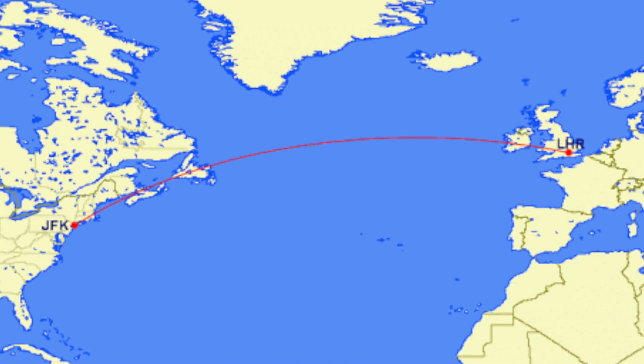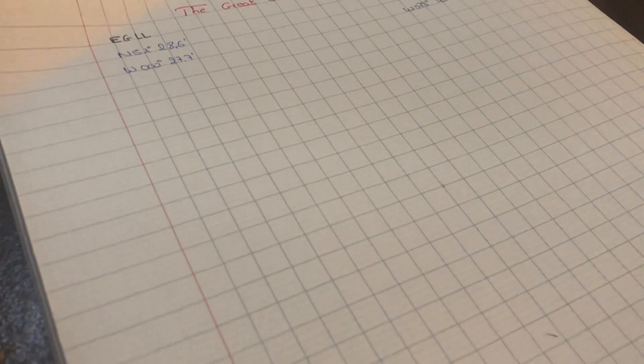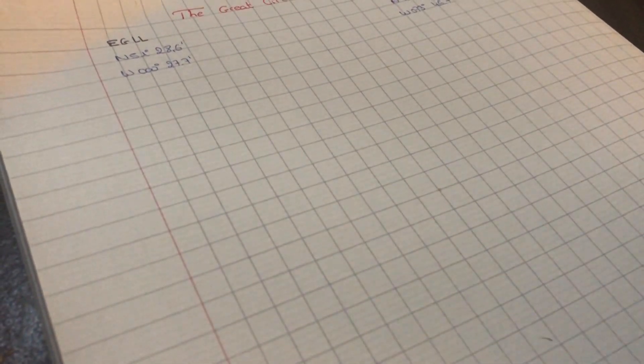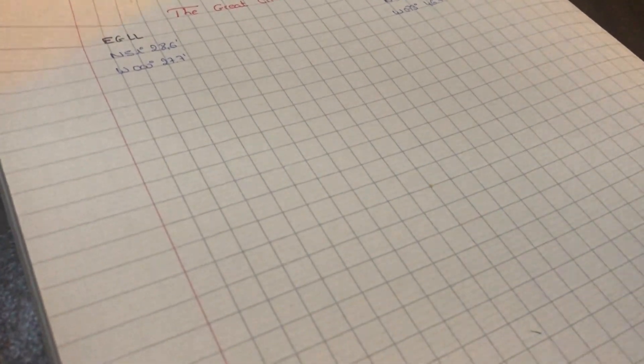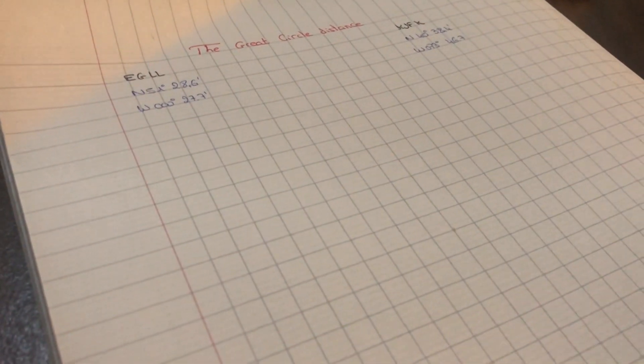So since the Earth is almost a sphere, the shortest distance between any two points—two cities, two airports—is a great circle distance, which is a direct line between these two points.